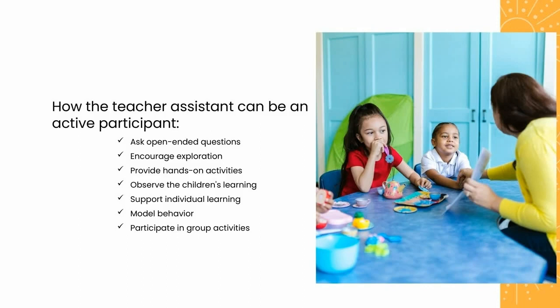Observe the children's learning. Pay attention to children's interests and assist the teacher with documenting their learning progress through pictures, videos, or written observations. Support individual learning. Work with the teacher to provide individualized support for children who may need extra help or challenges. Model behavior. Demonstrate positive behaviors and social skills that children can emulate.